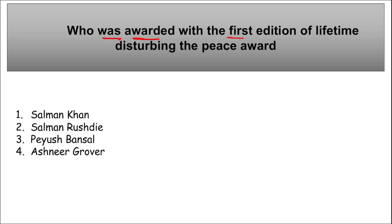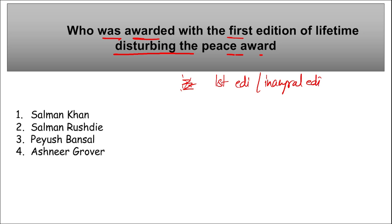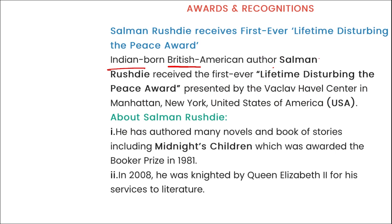Who was awarded with the first edition of the Lifetime Disturbing the Peace Award? It was Indian-born British-American author Salman Rushdie, who received the inaugural Lifetime Disturbing the Peace Award. This was presented in Manhattan, New York, USA. In 2008, Salman Rushdie was knighted by Queen Elizabeth II for his service to literature.